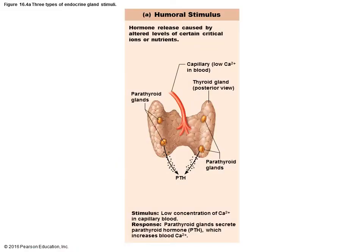This diagram illustrates that process: when calcium level decreases, it stimulates parathyroid hormone to be released, and the final response is increased calcium levels in the blood.